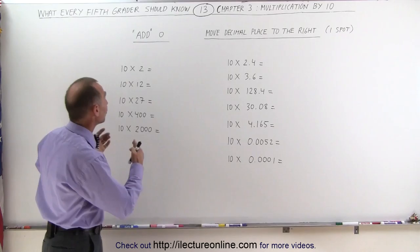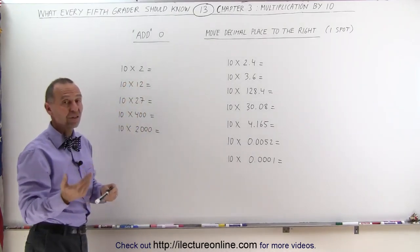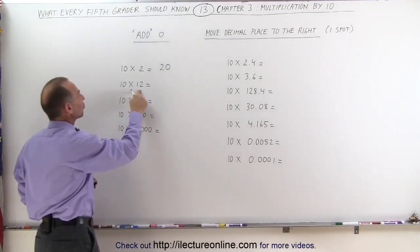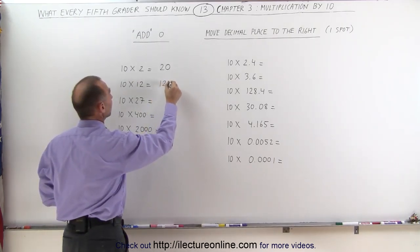Let's start with adding a zero to the number. Here we're multiplying 10 times 2, add a zero to 2, we get 20. The answer, therefore, is 20. 10 times 12, add a zero to the 12, and you get 120.